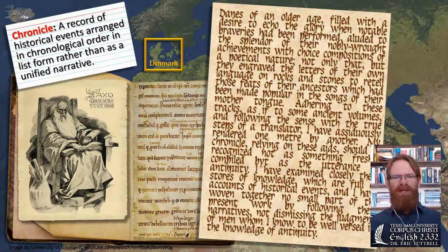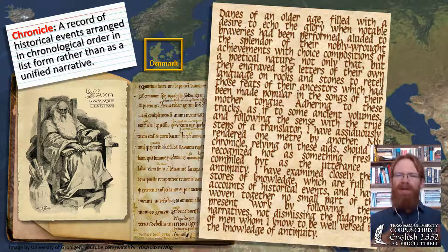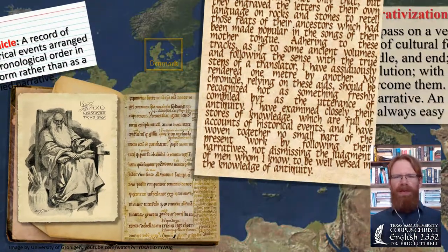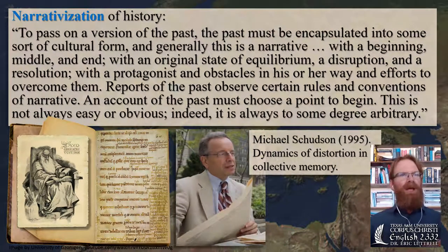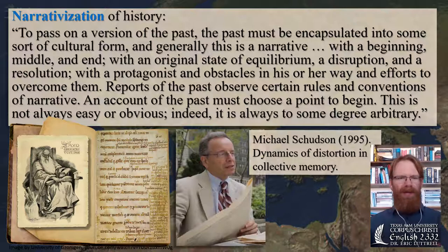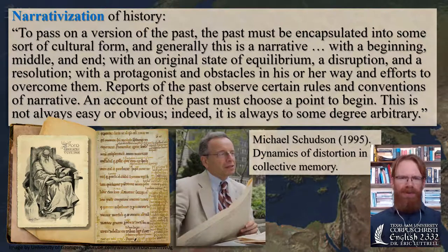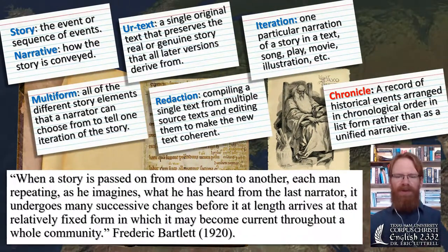The one thing unifying the whole chronicle is that it's a historical record of Denmark. But even though his goal is just history, history is always a narrative — always attributing large forces to individual people. As Michael Schudson put it, to pass a version of the past on, it has to be encapsulated into a cultural form, a narrative with a beginning, middle and end, an original state of equilibrium, a disruption, a resolution, a protagonist overcoming obstacles. The historian Hayden White has also written about the narrativization or emplotment of history, and as a narrative, a chronicle is susceptible to change over time.